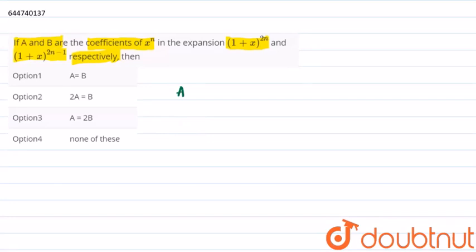We have been given that A is coefficient of x raise to n in (1 + x) raise to 2n. So A can be written as 2n C n.